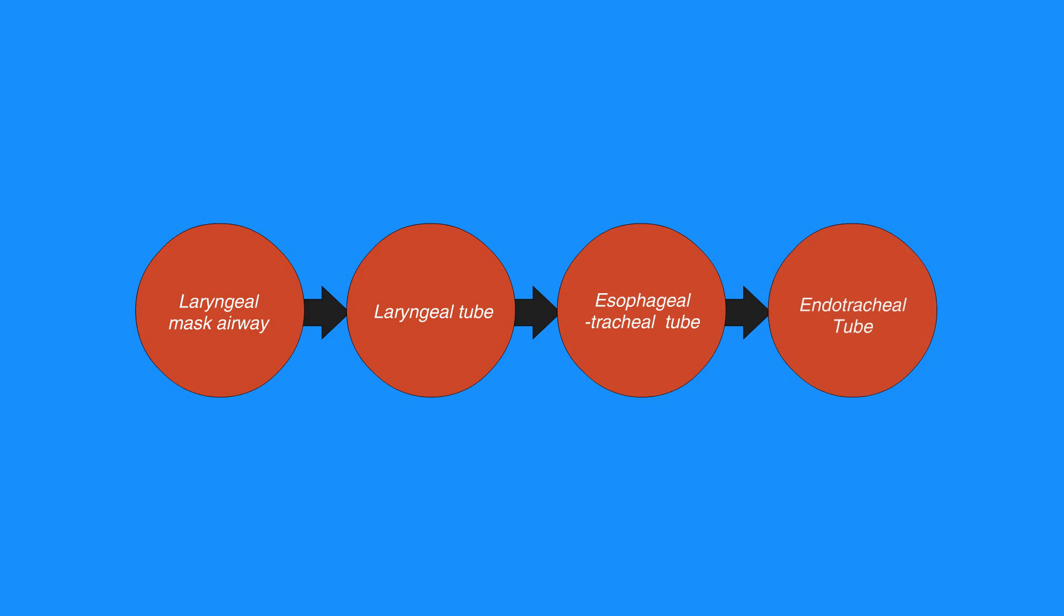Advanced airway equipment includes the laryngeal mask airway, laryngeal tube, esophageal tracheal tube, and endotracheal tube. Different styles of these supraglottic airways are available.